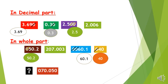Now let us consider the number 070.050. If we look at the whole part, it starts with a zero — so this zero has no value. And when we look at the decimal part, it also ends with a zero, and this zero is useless — we can cross it out as well. So the number is equal to 70.05.